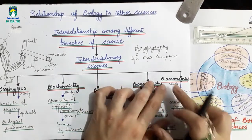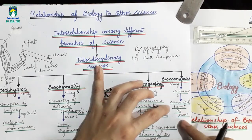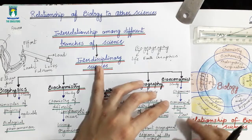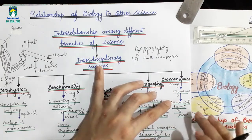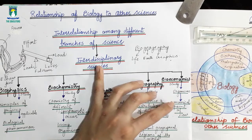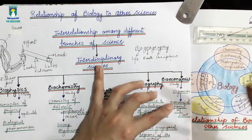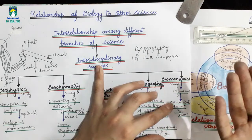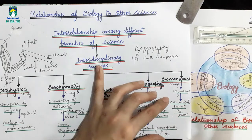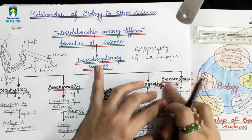Now we will discuss our next interdisciplinary science, which is Bioeconomics. Bioeconomics deals with the study of organisms from an economical point of view — determining the benefits, losses, and cost values. For example, the yield of wheat: how much is produced, how much is lost, how much benefit is gained, and what its cost value is. Wheat is a living organism, and analyzing its cost, value, loss, and benefit is economics — that is why biology is related to economics.